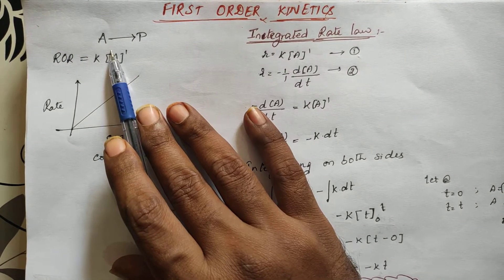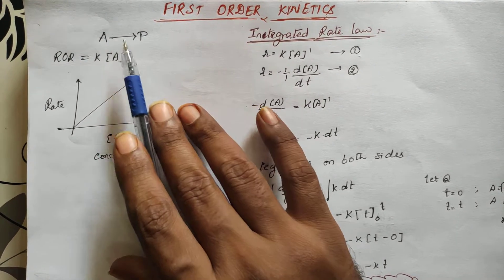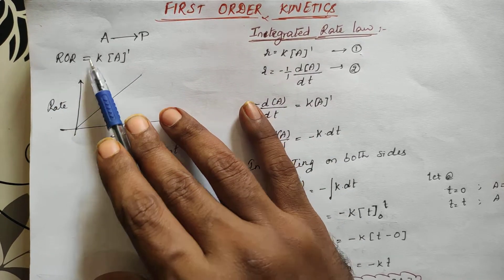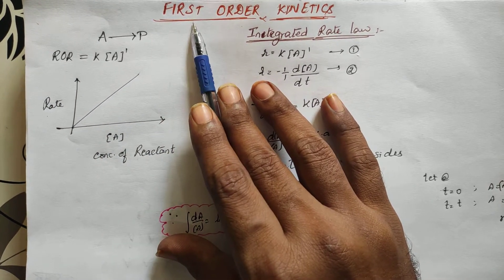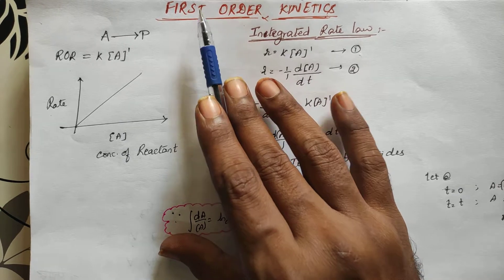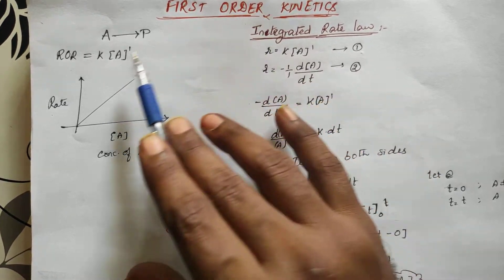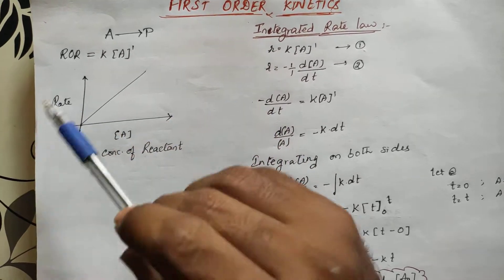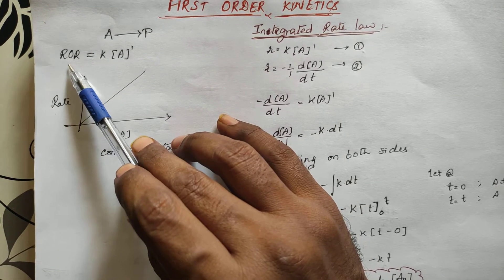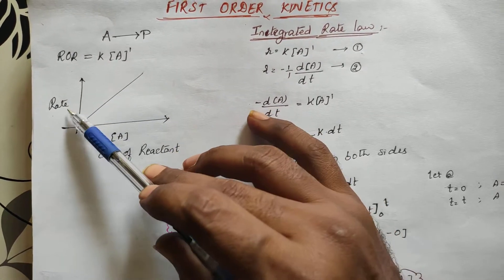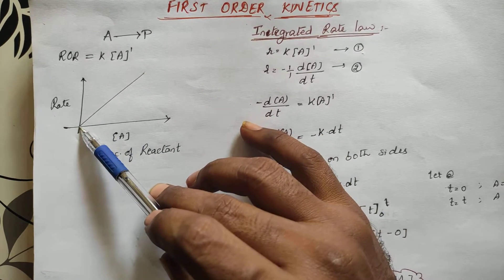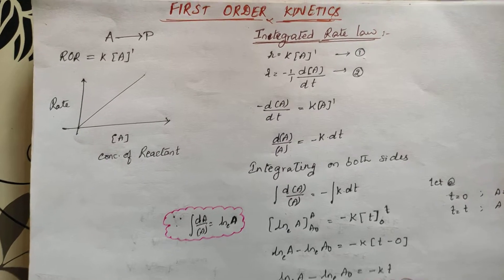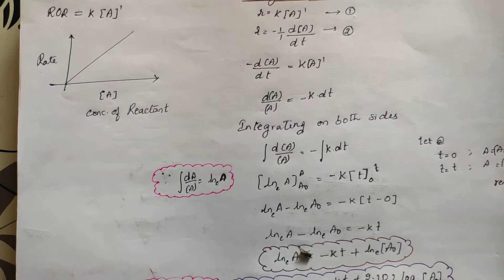So, A is a reactant getting converted to product. The rate of reaction — since it is first order — will be K into concentration of A. So when we plot the graph with respect to rate of reaction versus concentration, it will be a straight line passing through the origin because the graph will be in the form Y = MX.